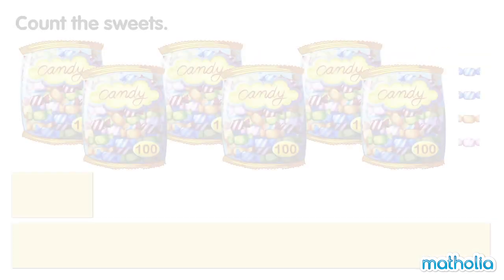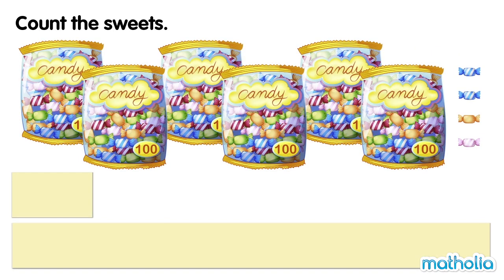Count the sweets. 100, 200, 300, 400, 500, 600, 601, 602, 603, 604. There are 604 sweets.